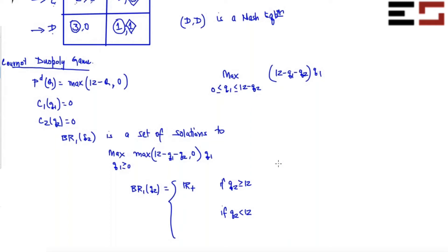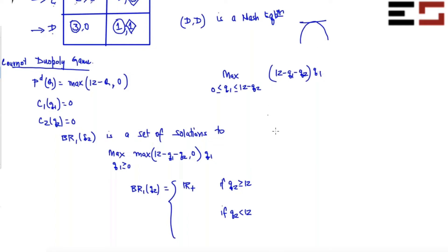You can either use the closed interval method, or use the fact that this is actually a concave function of Q1. Since this is a concave function of Q1 in this interval, it will have an interior peak — you can verify there will be a peak by taking the derivative and setting it equal to 0. You'll find that there is a solution sitting inside this interval.